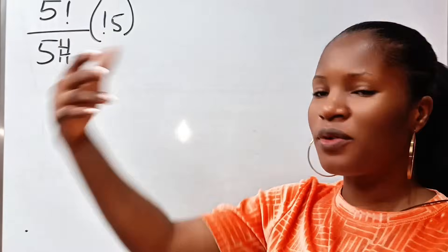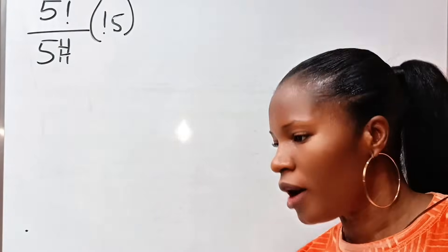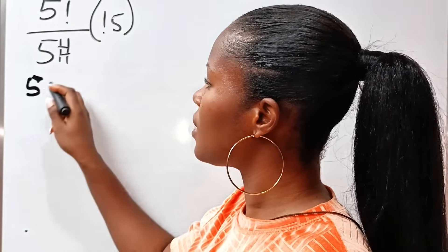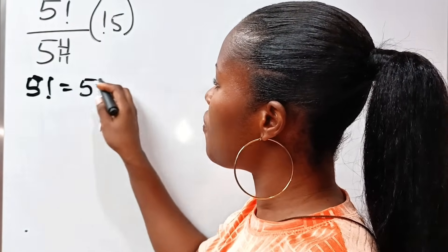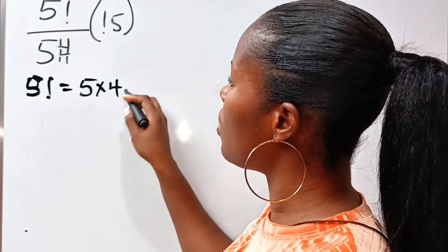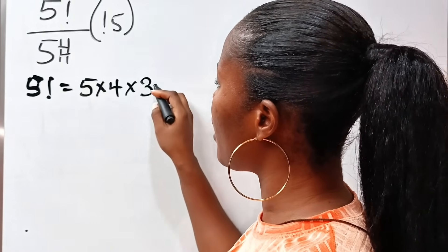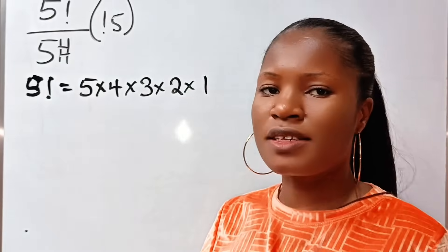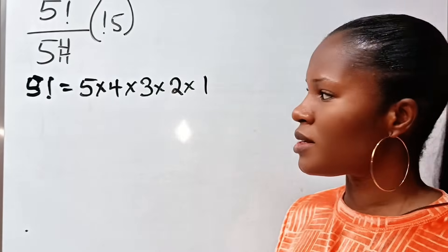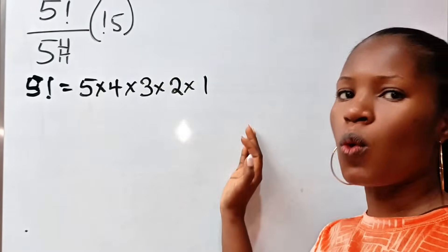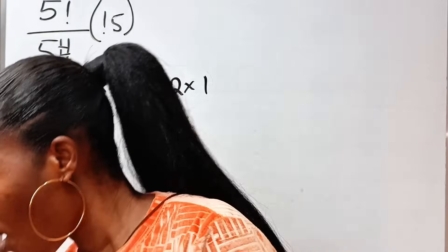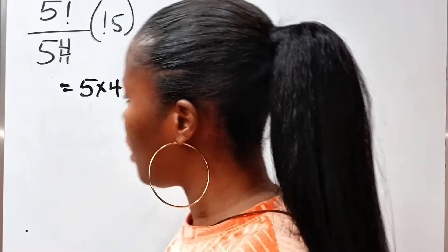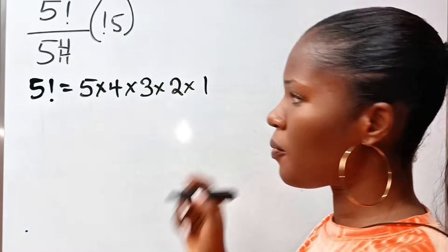We are going to start from the one we know very well: 5 factorial. 5 factorial simply means 5 multiplied by 4 multiplied by 3 multiplied by 2 multiplied by 1. That is the product of all numbers from 5 to 1. We are going to leave it this way.